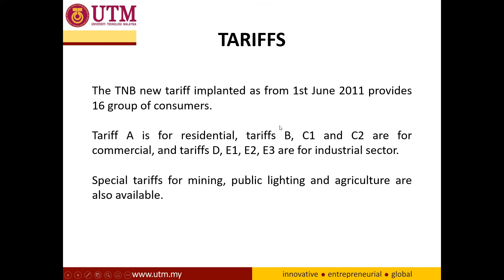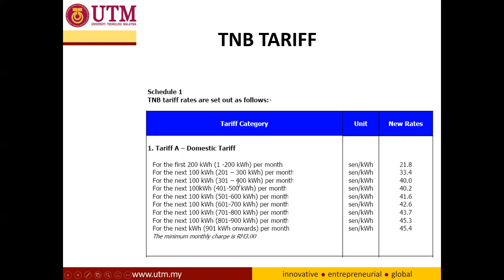The current TNB tariff was implemented on 1st June 2011 — almost 10 years ago — and it covers 16 groups of consumers in Malaysia, depending on whether the consumer is residential, factory, industrial, commercial, and so on. Tariff A is for residential consumers. Tariffs B, C1, and C2 are for commercial owners. Tariffs D, E1, E2, and E3 are for industrial sectors. There are also special tariffs for mining, public lighting, and agriculture.